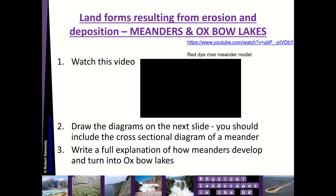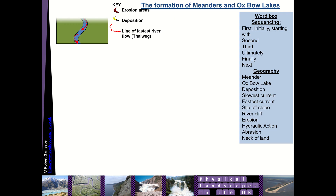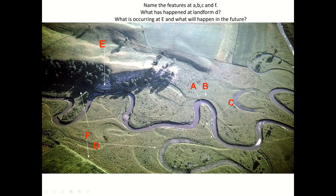Within your lesson, you can watch that video again. You should draw the diagrams on the next slide and include the cross section diagram. Then next to each diagram, write a full explanation of how those meanders develop and turn into an Oxbow Lake. For each diagram, you could start with 'first' and mention the word meander and where the fastest and slowest current are. In the second diagram, use the connective 'second' and discuss erosion on the outside and deposition on the inside. Use your cross section diagram third, and so on. As a little review, try and name the features on the photograph. Enjoy your geography.